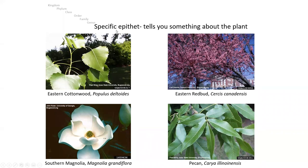The specific epithet is the descriptor — it's going to tell you something about the plant. Sometimes it describes the appearance. For instance, Populus deltoides, our eastern cottonwood — 'deltoides' is in reference to the delta or triangle-shaped leaf. The common name cottonwood refers to the seed dispersal method: the cottony fluff that flies around by wind.